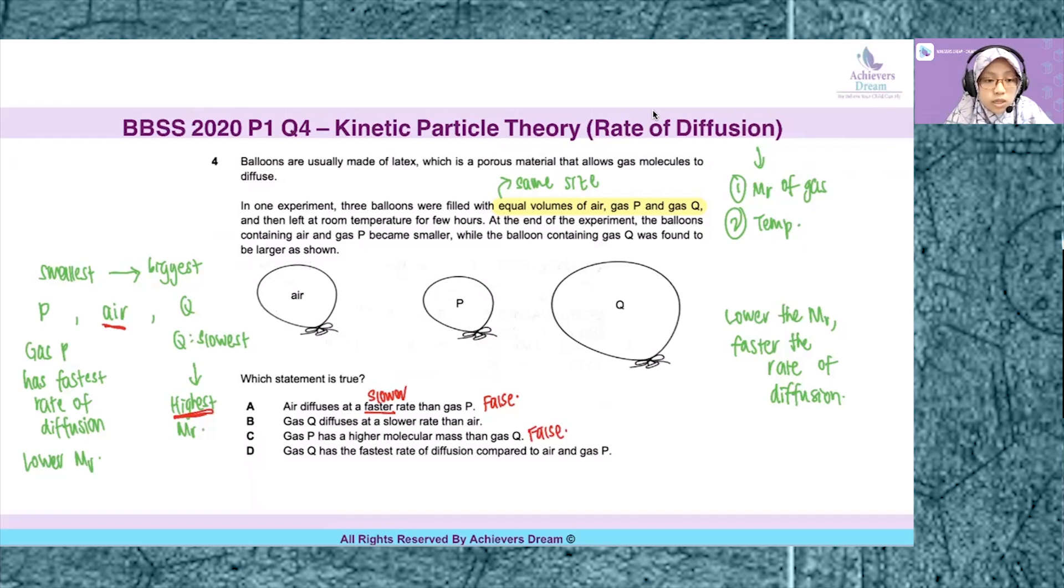There is no way for gas P to have a higher molecular mass than gas Q because this implies that balloon containing gas P will actually be the biggest if it indeed has a higher molecular mass than gas Q, which does not tally with the results that is being obtained.